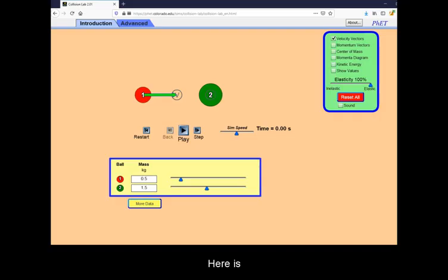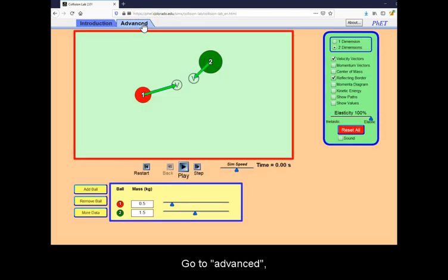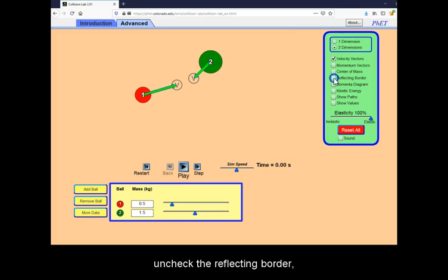Here is how you can simulate this using the Collision Lab Simulator. Go to Advanced, keep it two-dimensional, and uncheck the reflecting border to eliminate any outside force to the system.